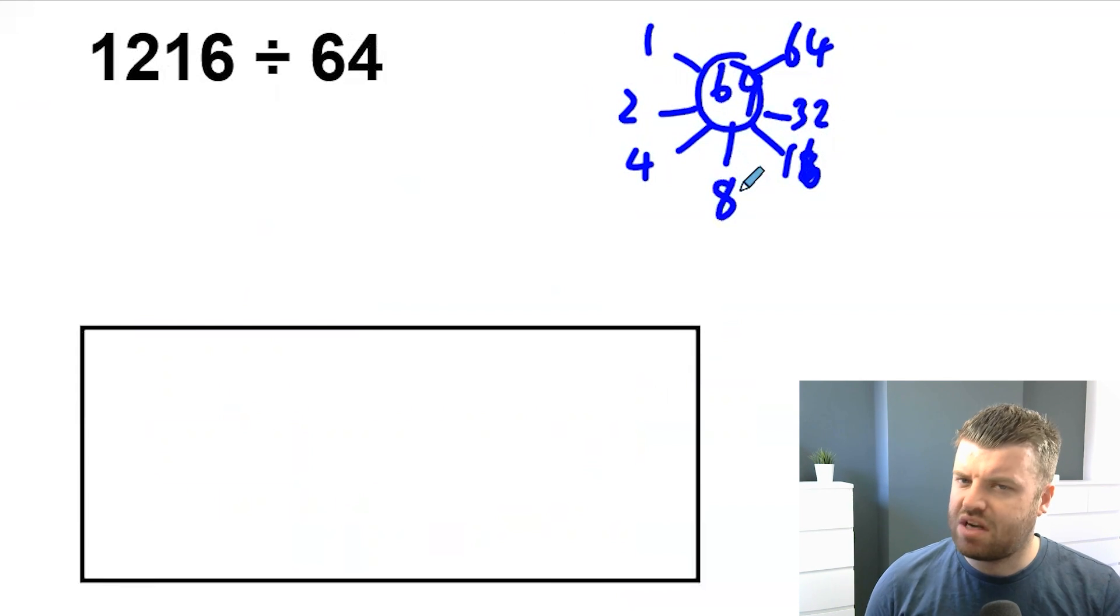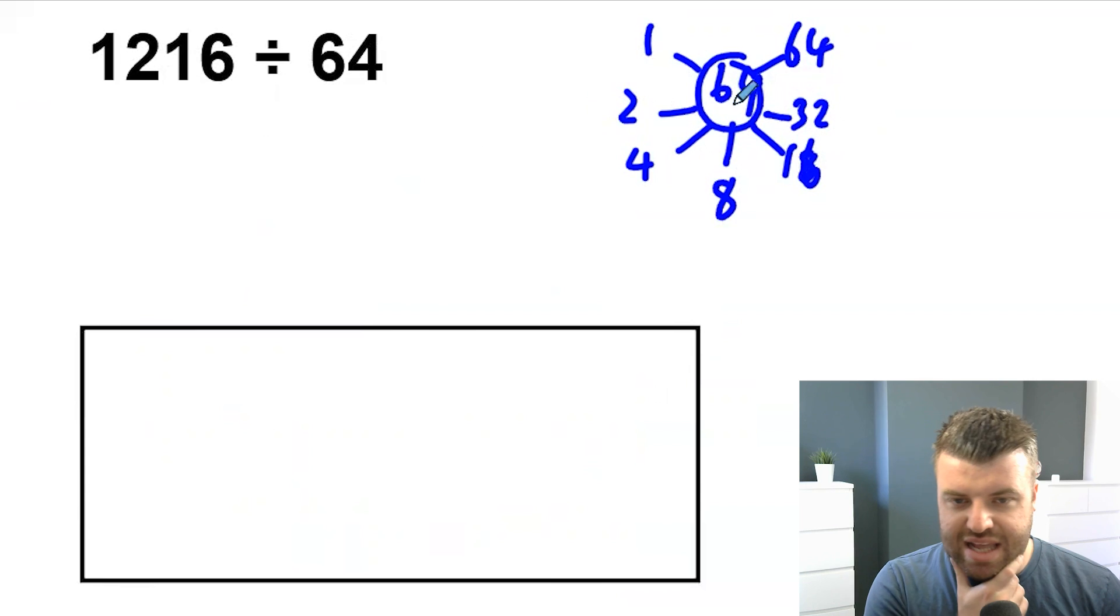And we can also do 8. 8's special. There's only one factor, even though it's a factor pair, because we multiply it by itself. 64 is a square number. Now, here's the thing. We could spend all day here trying to think of a factor pair. 2 and 32 wouldn't help, because we still have to divide it by 32. We don't know 32 times tables.